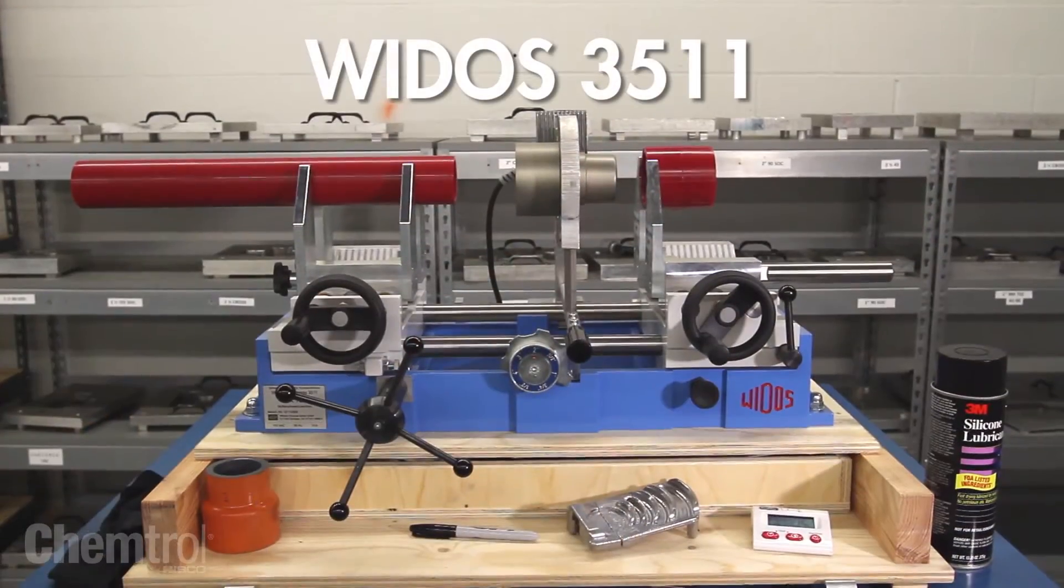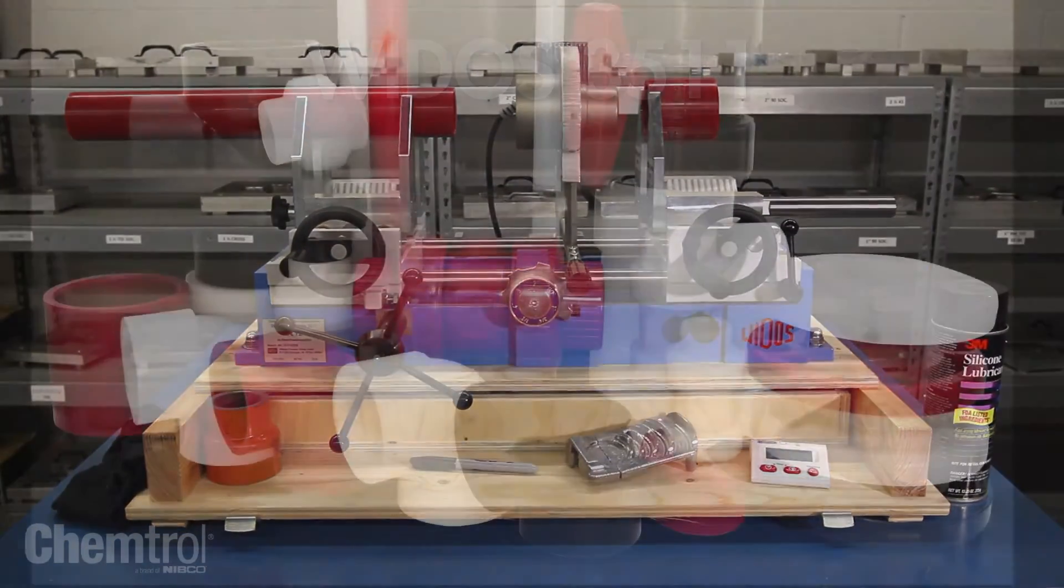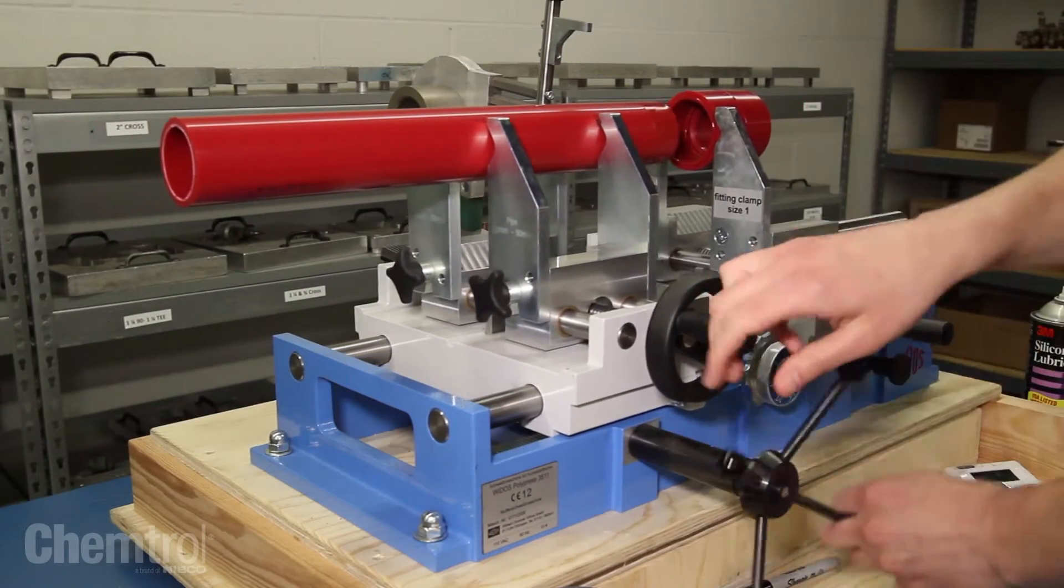This video shows you how to use the Widos 3511 machine to join Chemtrol polypropylene and PVDF pipe and fittings using socket heat fusion.